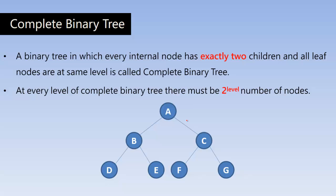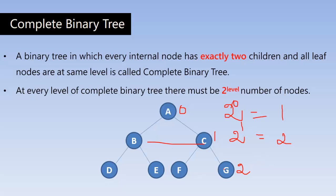Observe this diagram. Every internal node, that means non-leaf nodes, has got two children. A has got two children B and C, B has got two children D and E, C has got two children F and G. At every level of a complete binary tree, there must be 2 to the power of the level number of nodes. This is level 0, level 1, and level 2. At level 0: 2 to the power 0 equals 1 node, which is true. At level 1: 2 to the power 1 equals 2 nodes, which is correct. At level 2: 2 to the power 2 equals 4 nodes, which is true. That is called a complete binary tree.